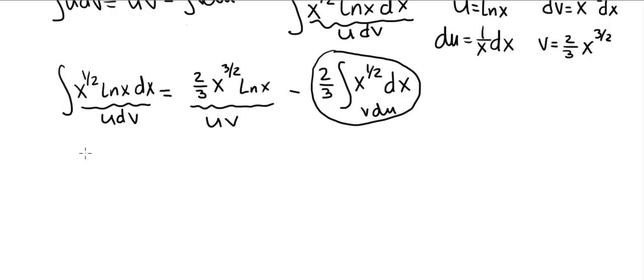So the answer is, this is equal to two-thirds x to the three-halves ln of x. Minus the integral of x to the one-half is two-thirds x to the three-halves. And then we have the two-thirds in front. So that would be two-thirds times two-thirds. That's four over nine x to the three-halves.